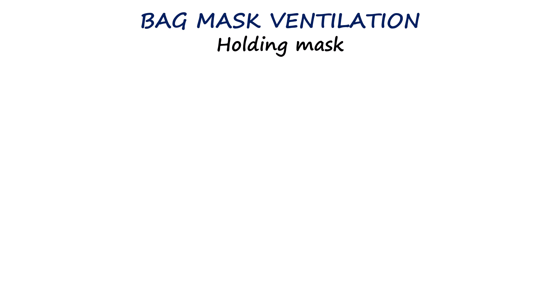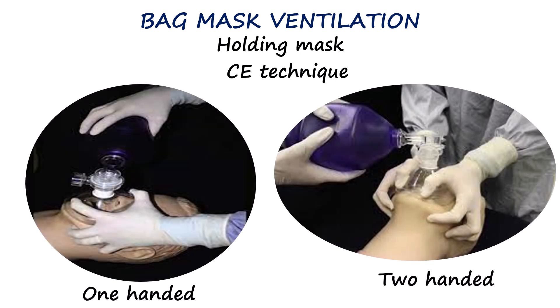Once the appropriate mask is chosen, the key is to create a snug fit between the mask rim and the contours of the face. The most commonly taught method is the CE technique, which can be performed with one hand or both hands. In the one-handed approach, the thumb and index finger form a C shape around the top and sides of the mask pressing it gently onto the face, while the remaining three fingers form an E under the mandible to provide jaw thrust. When leaks persist or one-hand ventilation is insufficient, the two-hand technique becomes necessary: both hands form the CE grip on either side of the mask while an assistant squeezes the bag, providing a stronger and more reliable seal especially in obese, edentulous or bearded patients.